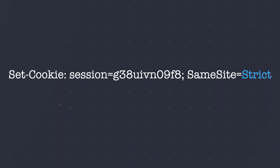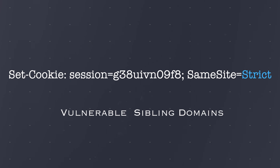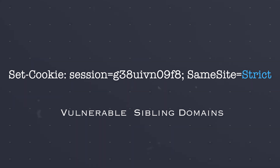Another common bypass technique is via vulnerable sibling domains. As we have discussed previously, requests can be same-site even if issued cross-origin. For example, if you find another subdomain that is vulnerable to cross-site scripting, this will allow you to fully bypass the site-based defenses completely. In general, you want to look out for all vulnerabilities that enable you to execute arbitrary secondary requests in a sibling domain.